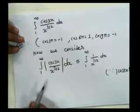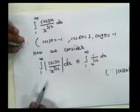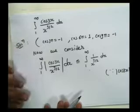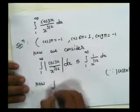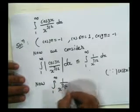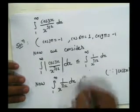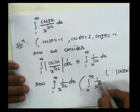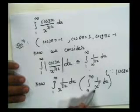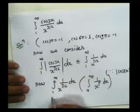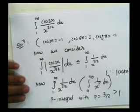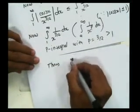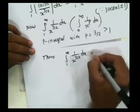We want to apply the direct comparison test, but first we need the convergence of one integral. We check integration from 1 to infinity of 1 upon x to the power 3/2 dx. This is a p-integral in the form integration from a to infinity of 1 upon x to the power p dx. This integral is convergent if p > 1. Here p = 3/2, which is greater than 1, so the given integral is convergent.